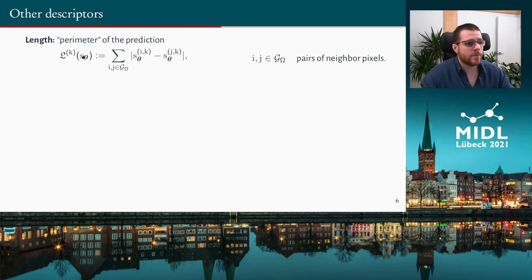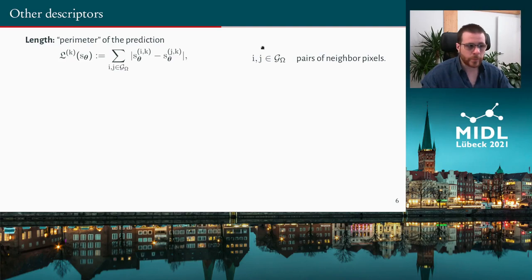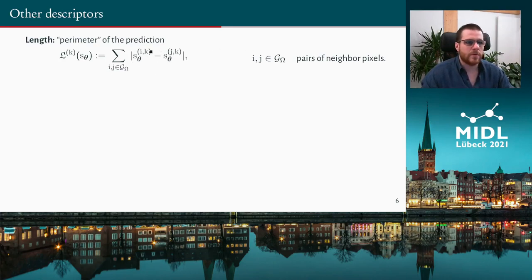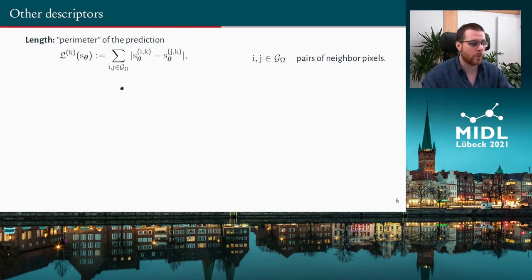There is also more to the descriptors than shape and central moments. Something really standard is the length of a prediction — its perimeter. To compute that, for each pair of neighboring pixels we look at their prediction. If they have the same prediction, there is no boundary at that spot and we treat it as zero in the overall sum. But if they have a different class, the segmentation has a boundary at that spot and we add one to the sum. By doing that over all pairs in the image, we can get the length of that prediction.